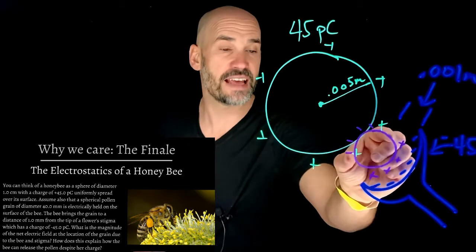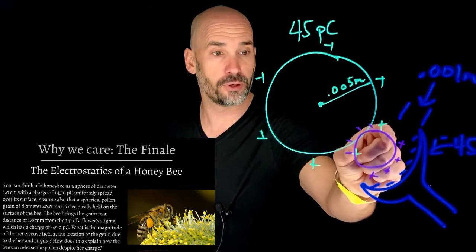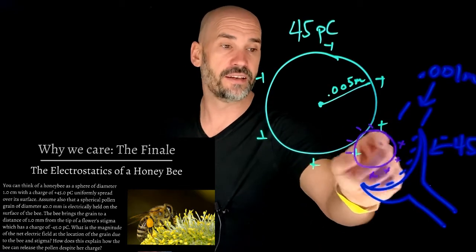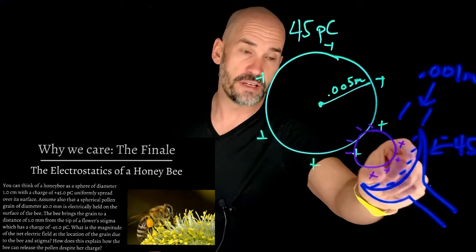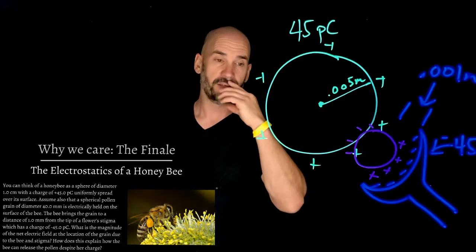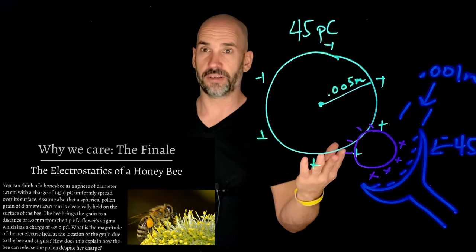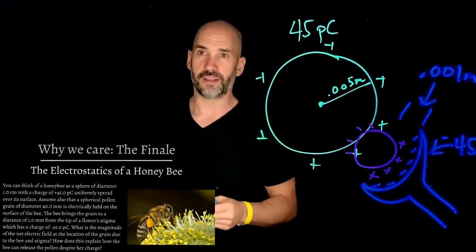Right. It's going to want to go to the thing that's charged the same, but is actually closer. So that's why then this actually, it's an electrostatic charge that will pull off the pollen and it'll then go into the stigma. And now you have this fertilization happening in this flower and the flower gets pretty.